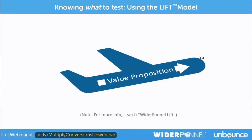The core of your conversion rate is your value proposition — that's the core of the LIFT model as well. There are a lot of different definitions for value proposition. I like to think of it as an equation with two sides that goes on in the prospect's mind: the perceived benefits of taking an action versus the perceived costs. If the perceived benefit is stronger than the perceived costs, they will have some motivation to take action and the value proposition will be positive. If the costs are too high, it will be negative and they'll bounce.